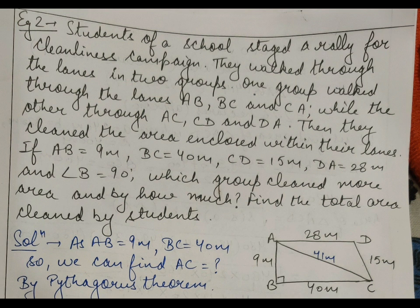Find the total area cleaned by the students. Here, AB equals 9 meter and BC equals 40 meter. According to the question, I have drawn a figure where ABC is one triangle with angle B equal to 90 degrees, and ADC is another triangle. For finding the area of triangle ACD, we need all three sides including AC, which we find using the Pythagorean theorem: AB² plus BC² equals AC². After putting the values, AC square equals 1681, giving AC equals 41 meter.